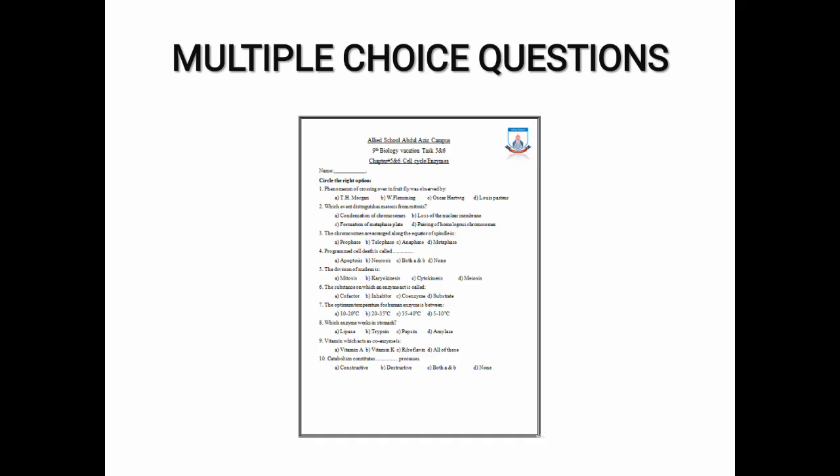So students, first of all, you have multiple choice questions. Five MCQs from chapter number five and another five MCQs from chapter number six enzymes. So students, you should solve the MCQs on your given sheet and put your name on the summer vacation task sheet.